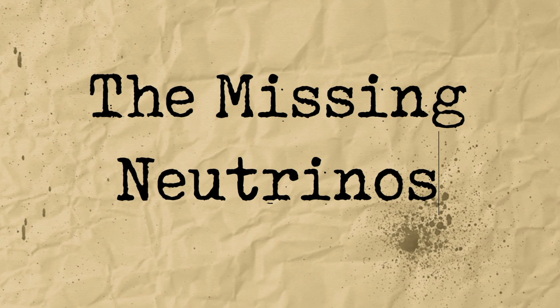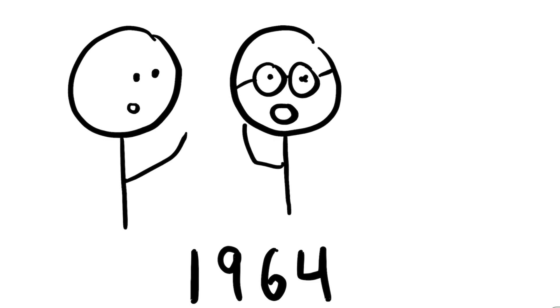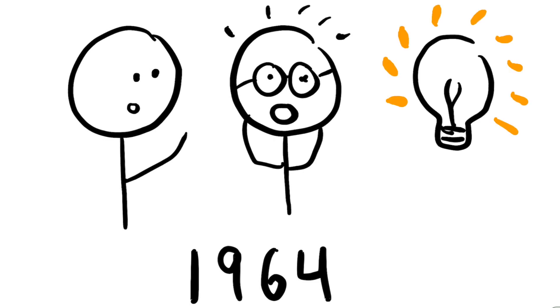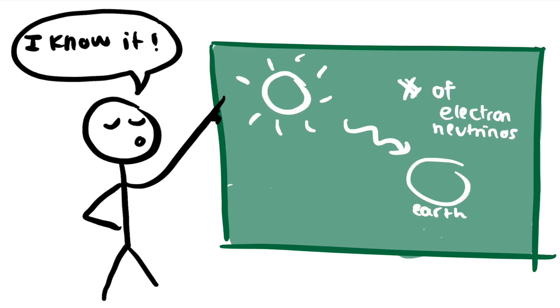However, it wasn't until 1964 that some scientists came up with an experiment to test whether converting hydrogen nuclei to helium nuclei in the sun was indeed the source of sunlight. Using a detailed computer model of the sun, scientists were able to predict the number of electron neutrinos produced in a nuclear fusion in the solar interior.